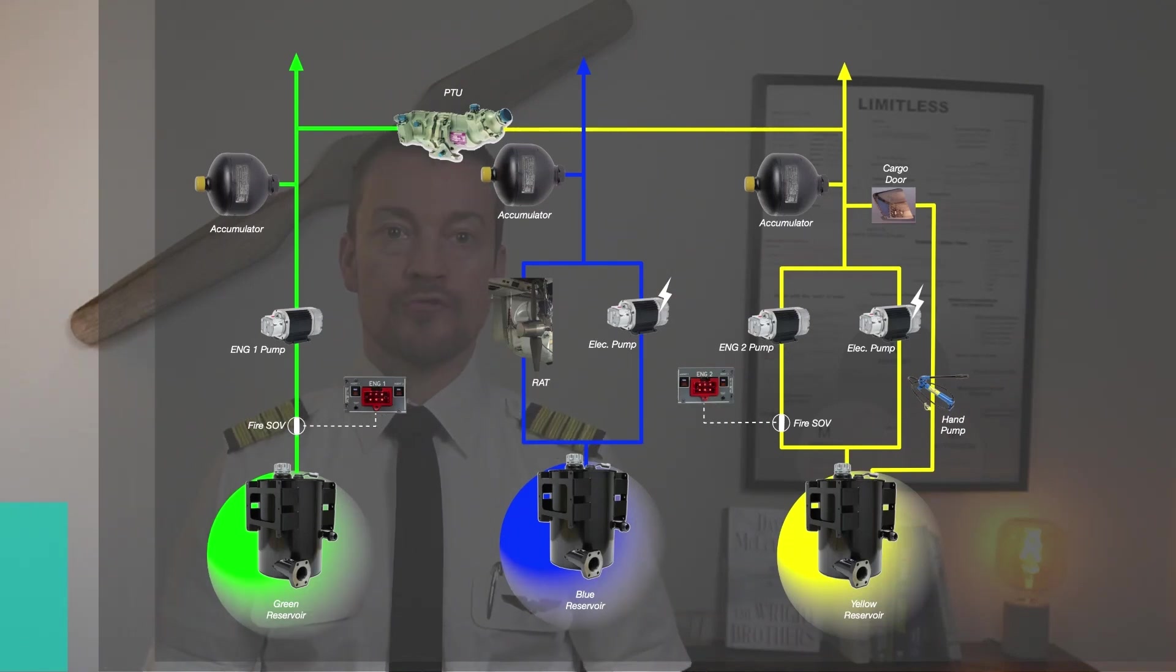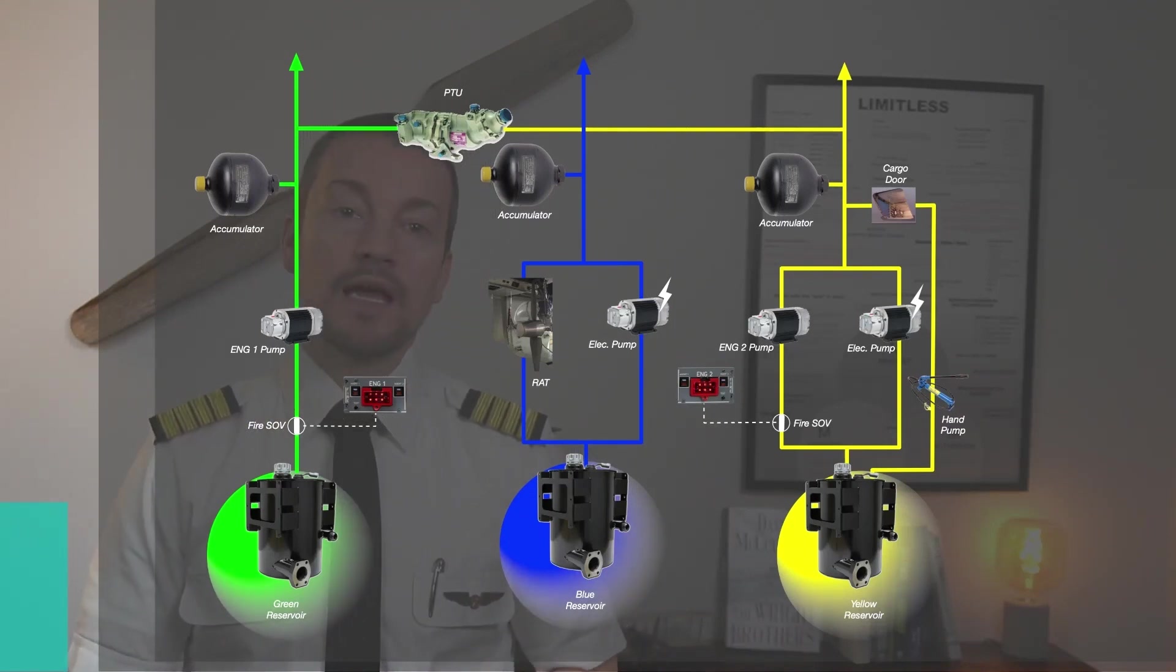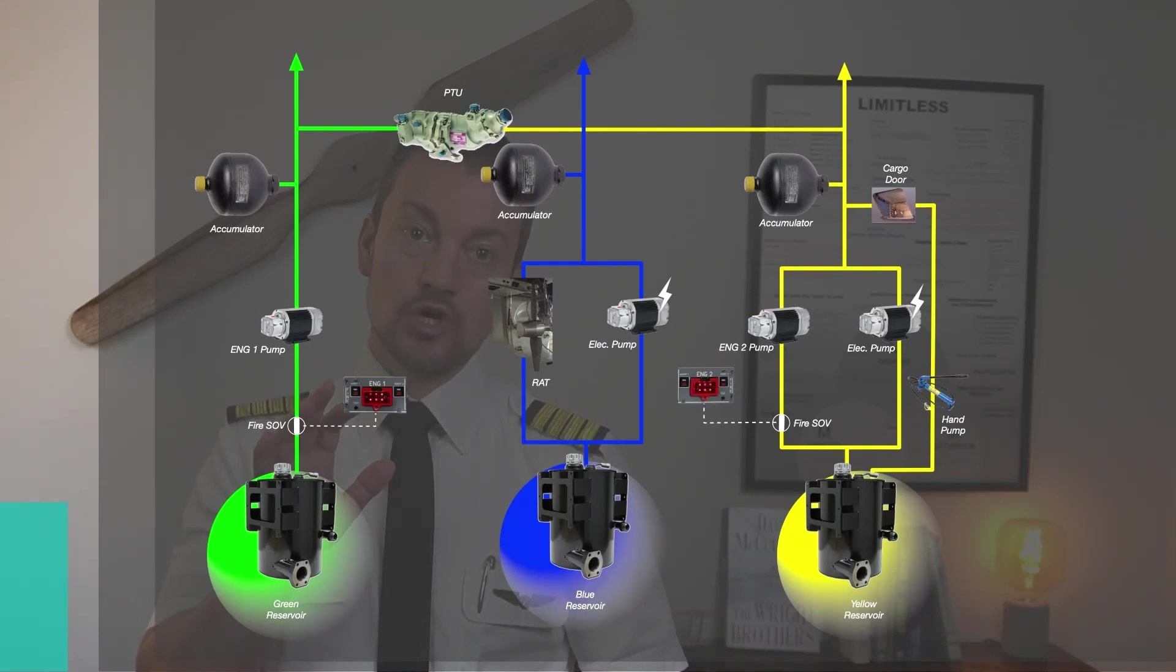In the scenario I brought forward before about the green and the yellow system, consider that you have the green system right here lose pressure because you lost engine number one. There is no electrical pump on the system, hence you will have to pressurize it via another mean.